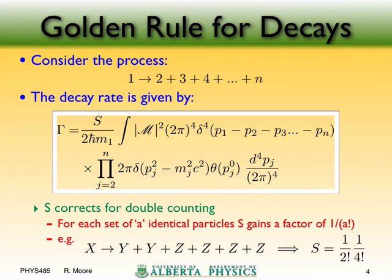For virtual particles — propagators in the middle of Feynman diagrams — we don't apply this on-shell delta function. The contribution peaks when the virtual particle is on its mass shell (giving a pole), but we don't exclude off-shell contributions. That treatment comes in through the matrix element, not the kinematics. The delta function constraint appears here in the phase-space integration for final-state real particles only.